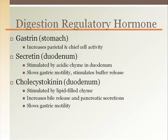Cholecystokinin from the duodenum is stimulated by the presence of fat or lipids in the chyme. It causes the release of bile and pancreatic enzymes while also slowing gastric motility, similar to secretin. There are many other regulatory hormones for the digestive system, each with unique and wide-ranging roles.